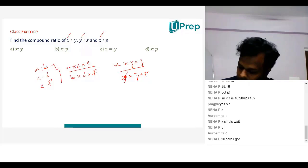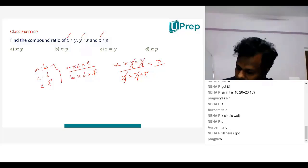Now X, Y and Y gets cancelled. Z and Z gets cancelled. Is it? So what is remaining here children? I have X by P.